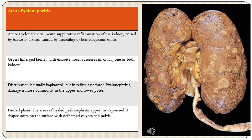Distribution of abscesses is usually haphazard; however, in reflux-associated pyelonephritis damage is more commonly seen in the upper and lower poles because of the peculiar morphology of the calyces in those areas. In the healed phase, areas of healed pyelonephritis appear as depressed U-shaped scars on the surface with deformed calyces and pelvis underneath. In the gross picture, the kidneys are enlarged and the renal surface is studded with variable-sized yellowish abscesses.